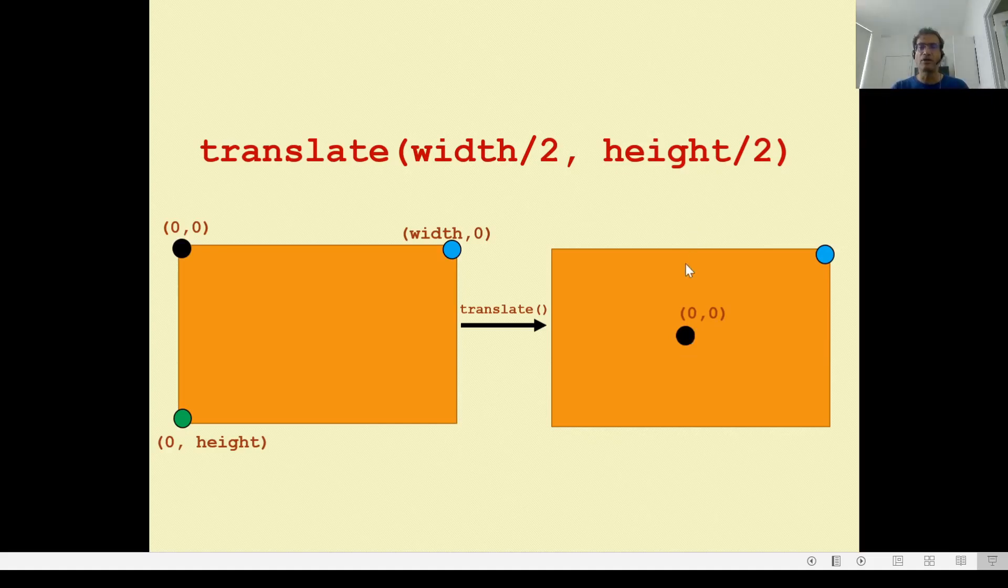Remember y increases as you go down. So to go up, you have to do minus. Therefore, if I did my math right, this coordinate point should be width by two comma minus height by two. That's how it is.